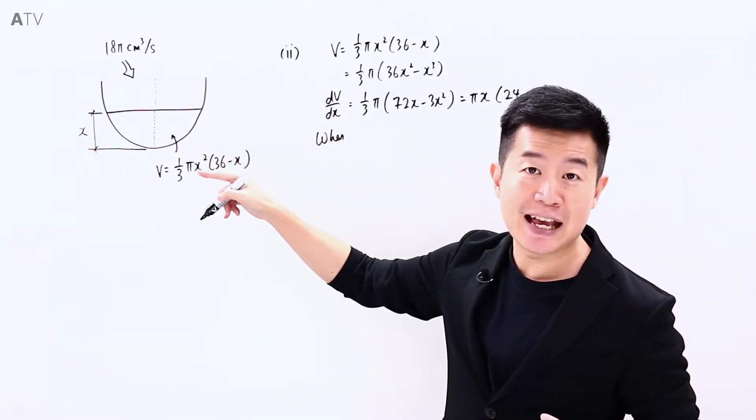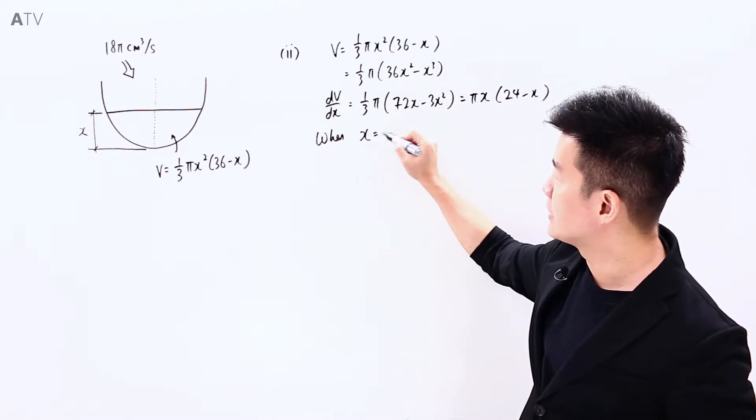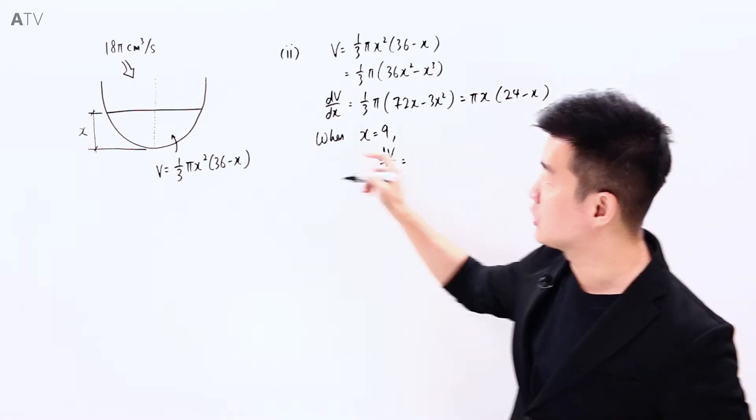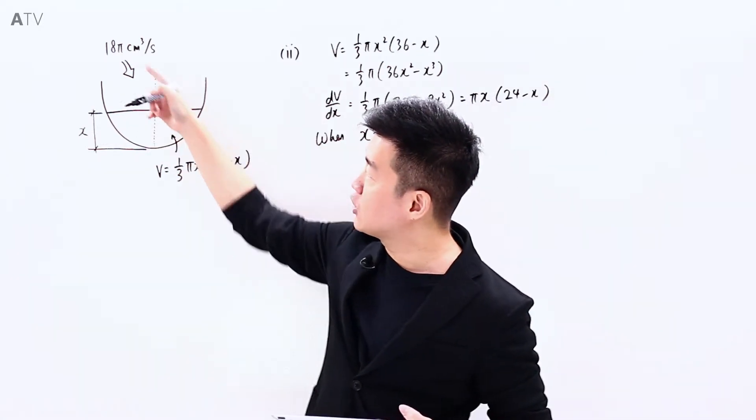And we do know what is dV/dt. According to the question, water is going to be going in at a constant rate of 18π.